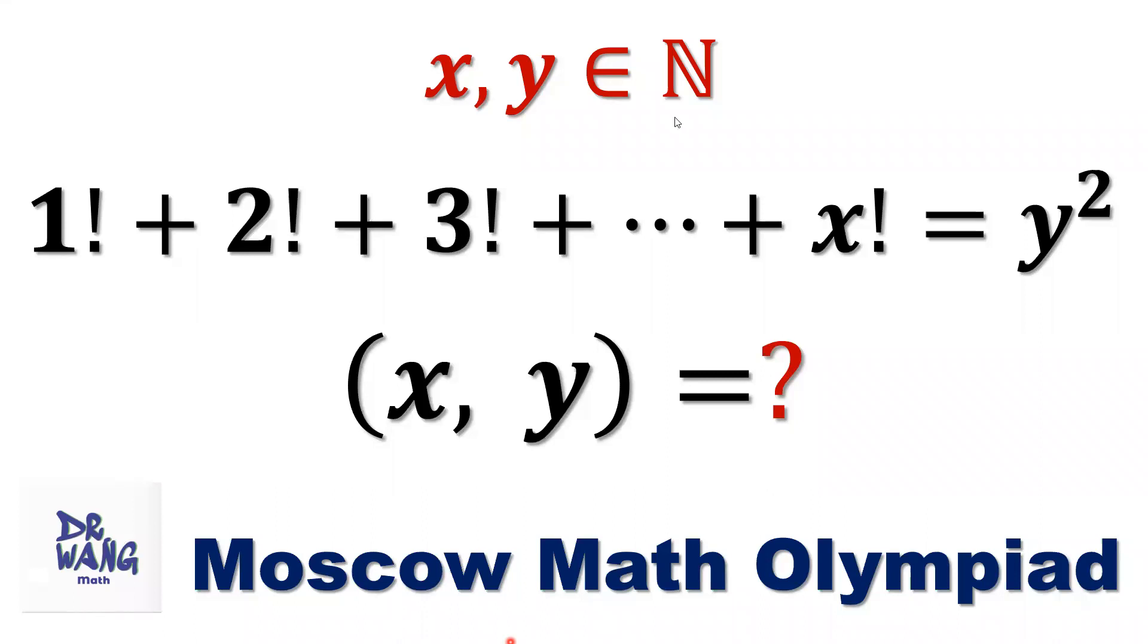If x and y are positive integers, 1 factorial plus 2 factorial plus 3 factorial plus until plus x factorial equals y squared, what are the values of x and y?